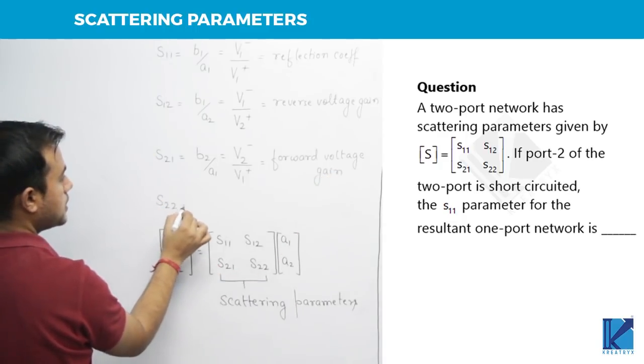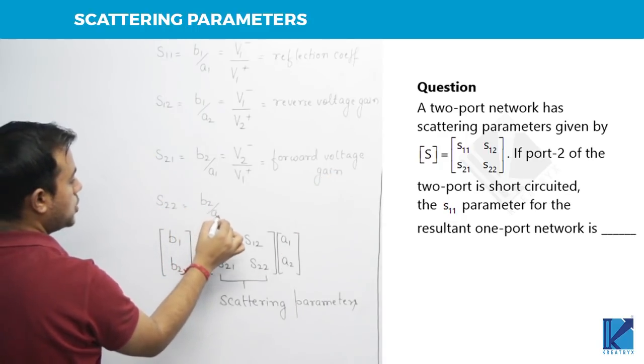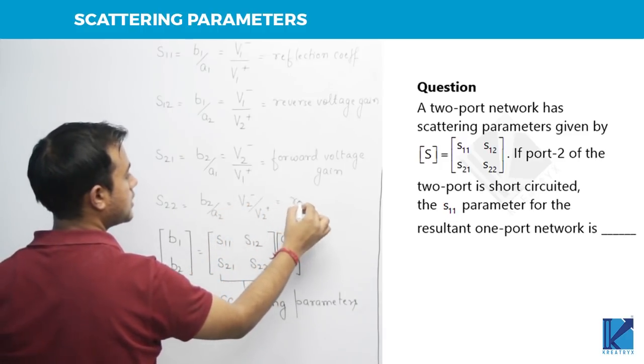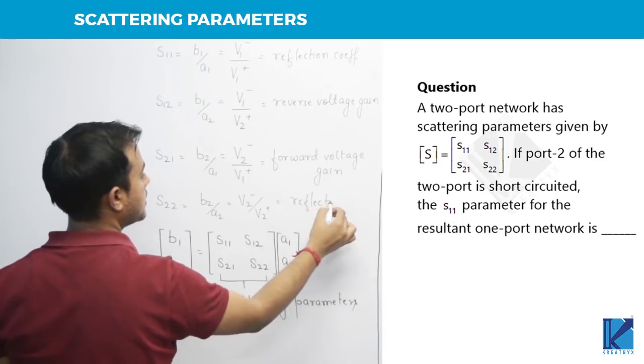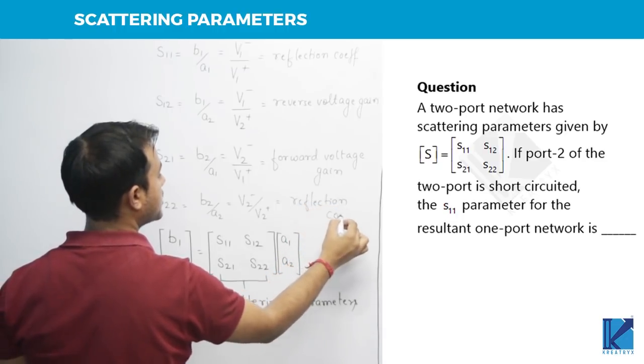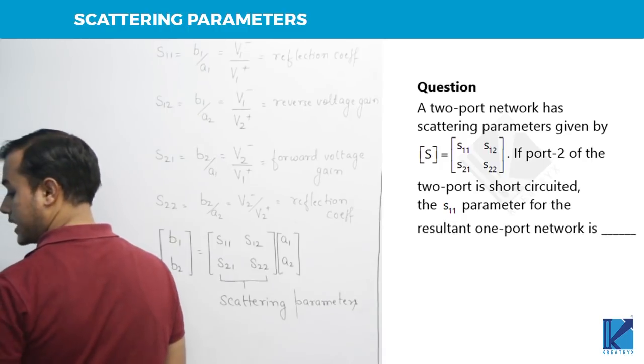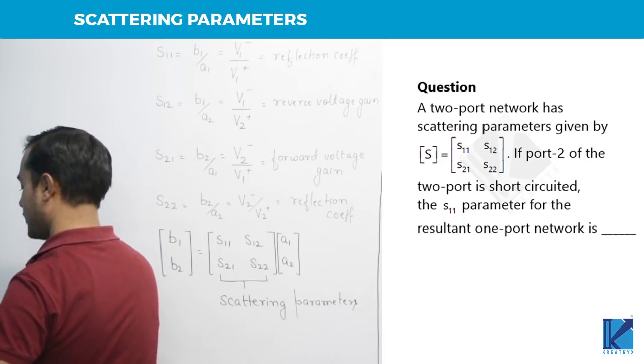And the last one, S22, B2 by A2, that is B2 minus by B2 plus, is your reflection coefficient. But the first one is reflection coefficient at port 1, and the second one is reflection coefficient at port number 2.